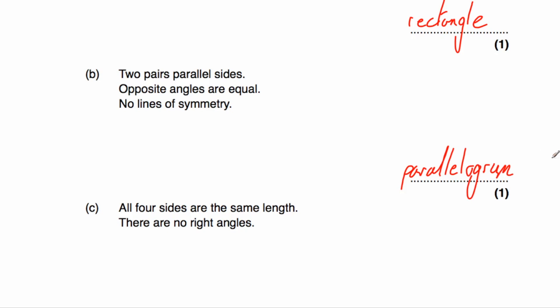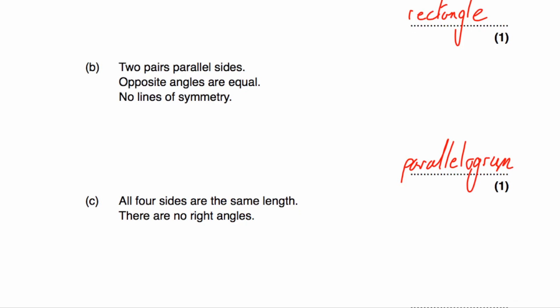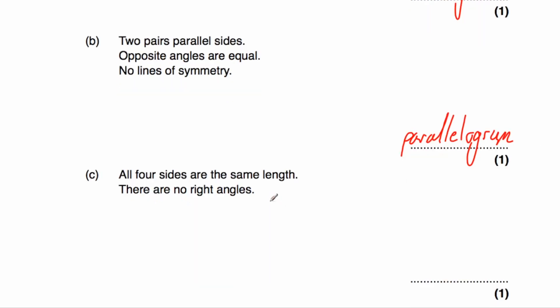Part C: all four sides are the same length — that means square or rhombus. But there are no right angles, so it's not a square. The answer is a rhombus.